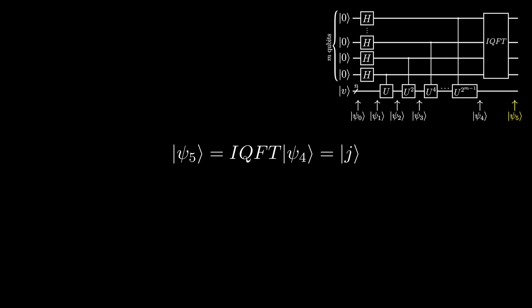Now, with j, we can multiply it by 2π to get θ, and then we can find the eigenvalue as e^(iθ).